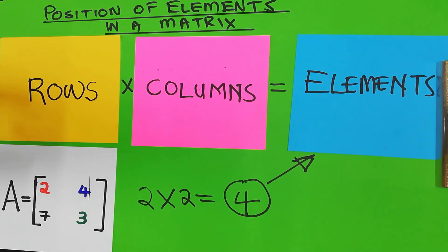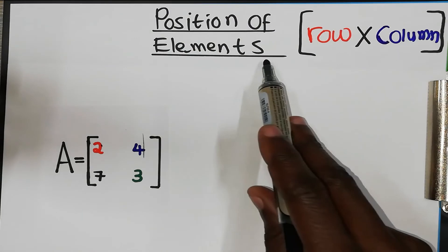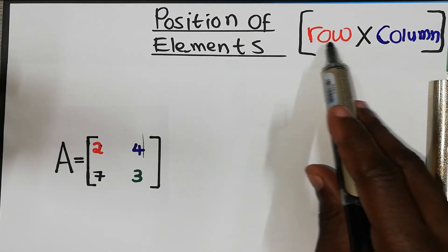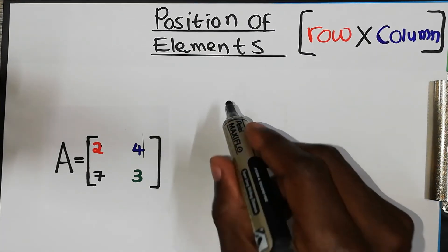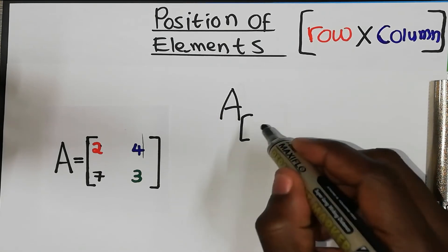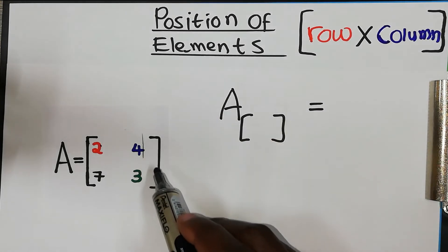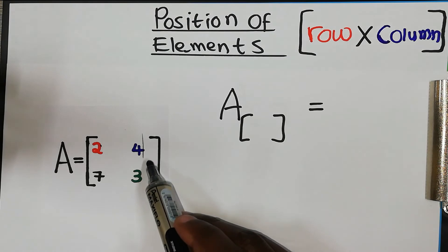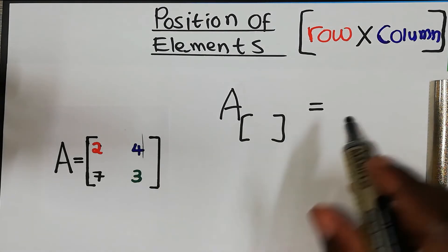The position of elements always takes this format: row and column. For example, how do you determine the position of element four?